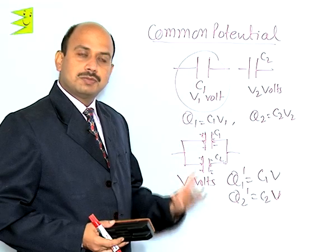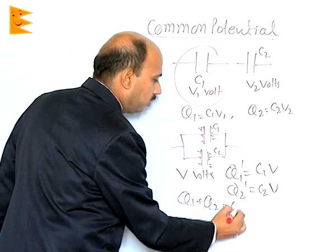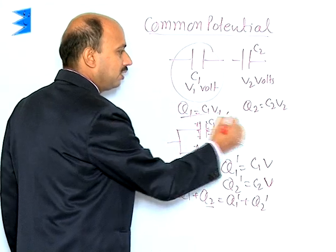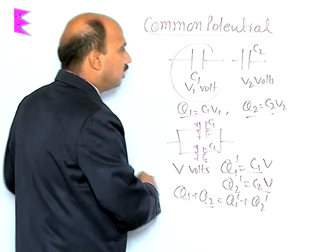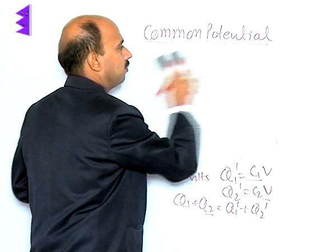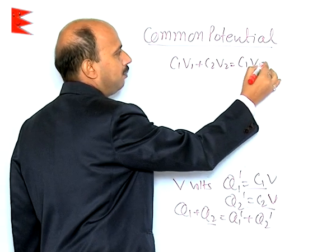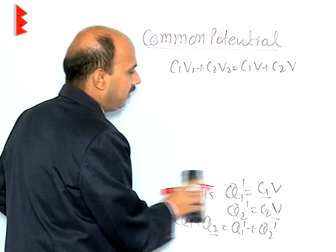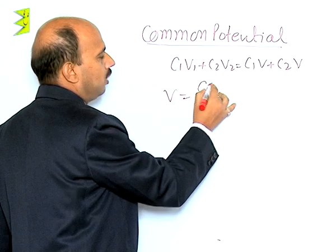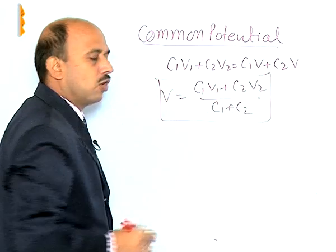Using conservation of charge, we write q₁ + q₂ = q₁' + q₂'. Putting in the values: C₁V₁ + C₂V₂ = C₁V + C₂V, where V is the common potential. Solving for V, we get V = (C₁V₁ + C₂V₂) / (C₁ + C₂). This is the expression for the common potential.